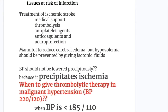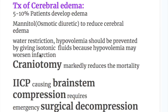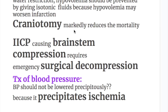Treatment of ischemic stroke generally involves medical support, thrombolysis, anti-platelet agents, anticoagulants, and neuroprotection. For cerebral edema, which affects 5 to 10% of patients: mannitol and osmotic diuretics reduce cerebral edema; water restriction is used, but hypovolemia should be prevented with isotonic fluids as hypovolemia may worsen infarction. Craniotomy markedly reduces mortality. Increased intracranial pressure causing brain stem compression requires emergency surgical decompression.